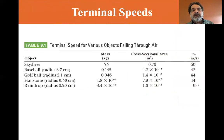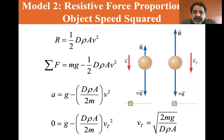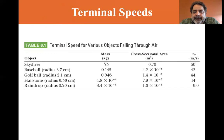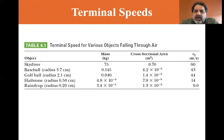A table shows typical terminal speeds: a skydiver of 75 kg with cross-sectional area 0.7 square meters has terminal velocity 60 m/s; a baseball (radius 3.7 cm, mass 0.145 kg) gives 43 m/s; a golf ball 44 m/s; a hailstone 14 m/s; and a raindrop 9 m/s.